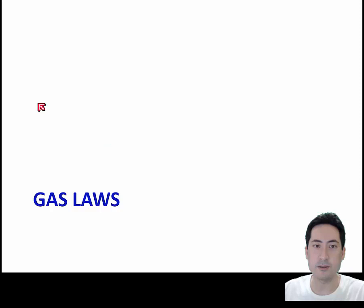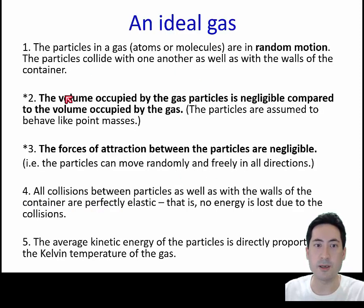Now we move into the gas laws, which we're going to combine. The first assumption is we have an ideal gas, which means the particles are in random motion. The volume occupied by the gas particles is negligible compared to the volume occupied by the gas, which means it's mainly space.